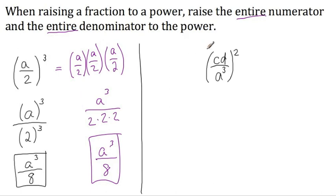If we were careless about what we were doing right now, and we said we're going to raise this numerator to the power, and we wrote cd squared, this would not be correct. We've neglected to raise the entire numerator to the power. Presently, the only thing being raised to the power is the d. The c here is not being raised to the power.